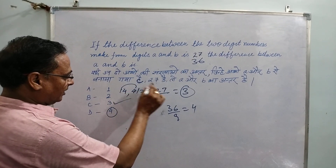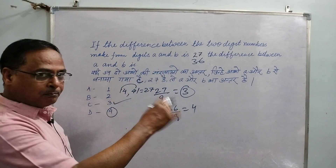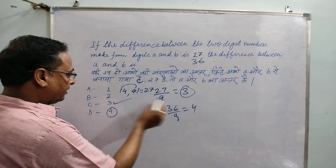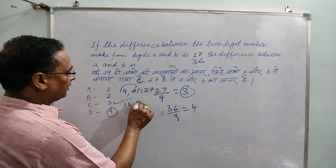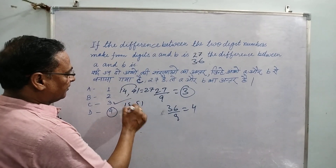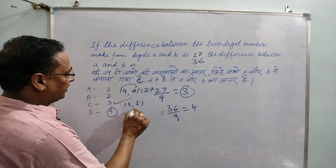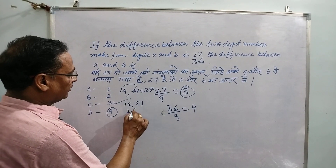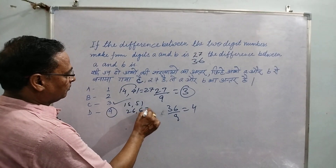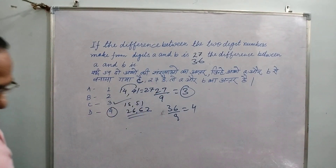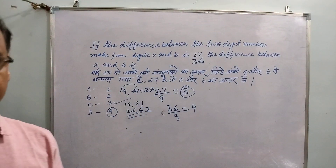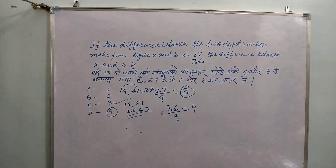Two five five two — one five five one, difference 7. Two six two — this way, two numbers, divide by nine, then digit difference.